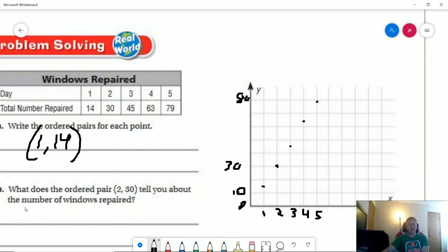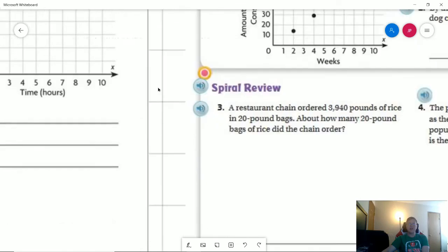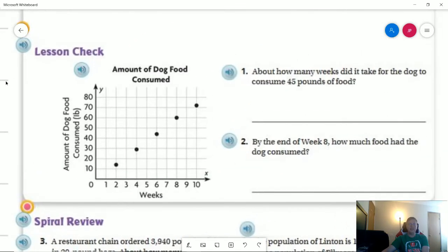Number two or part B of number two. What does the ordered pair (2,30) tell you about the number of windows repaired? It tells us that on day two, we repaired 30 windows. And that should be that part. Let's go ahead and take a look at the back page.